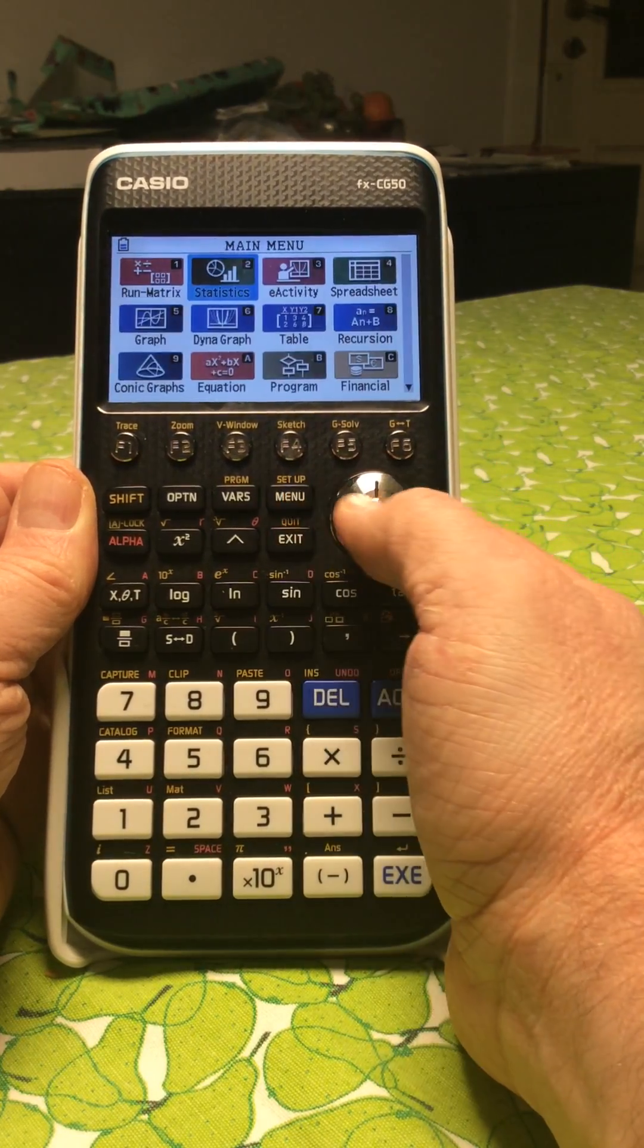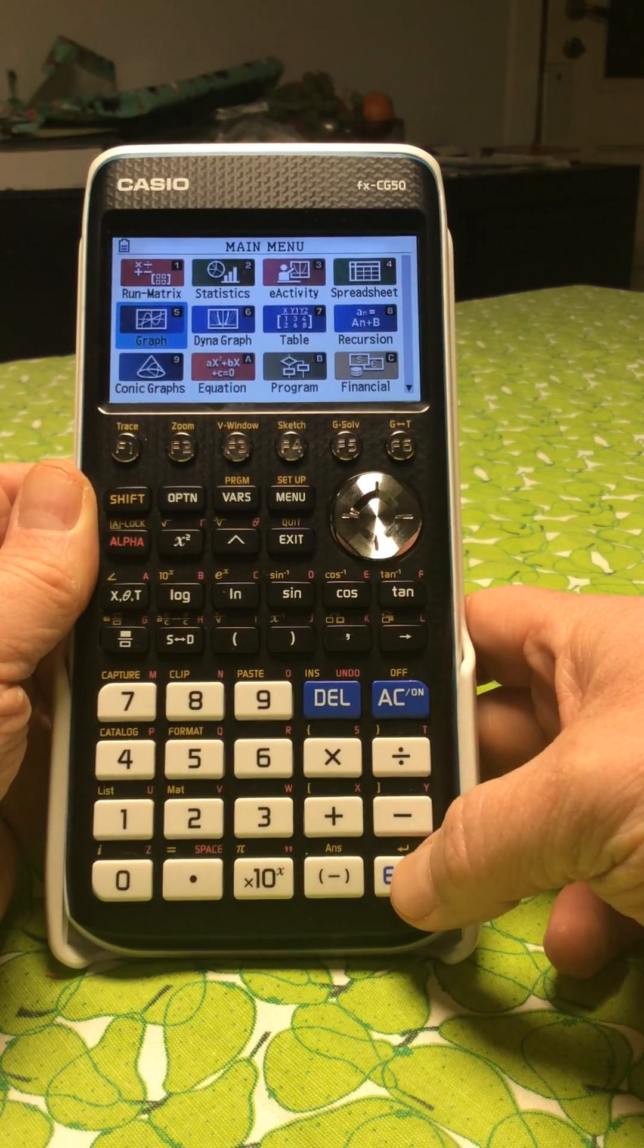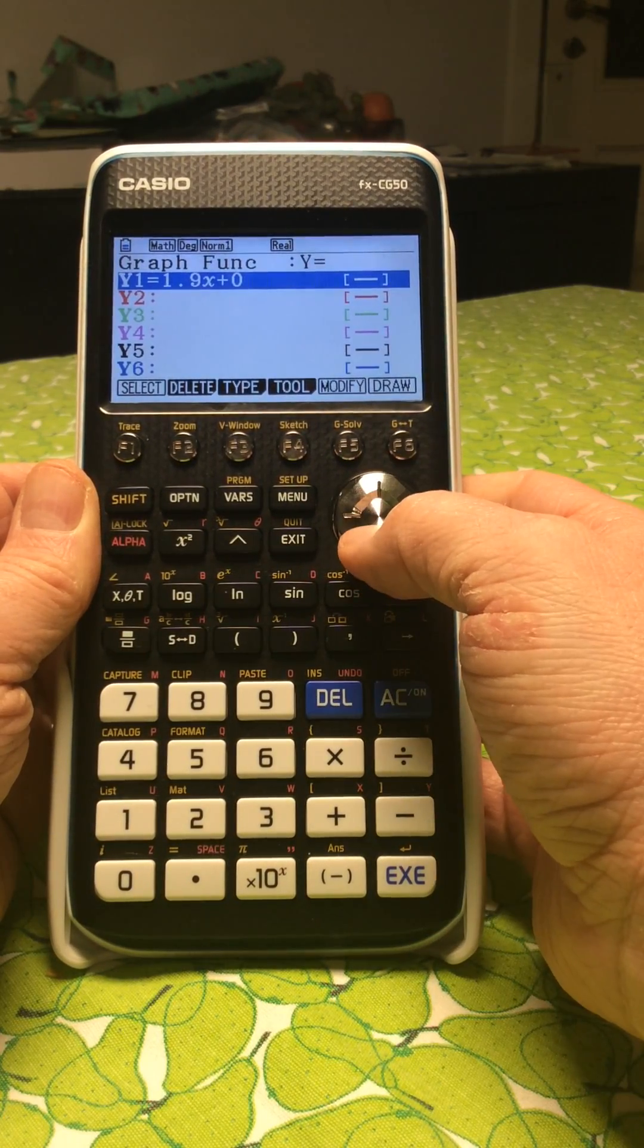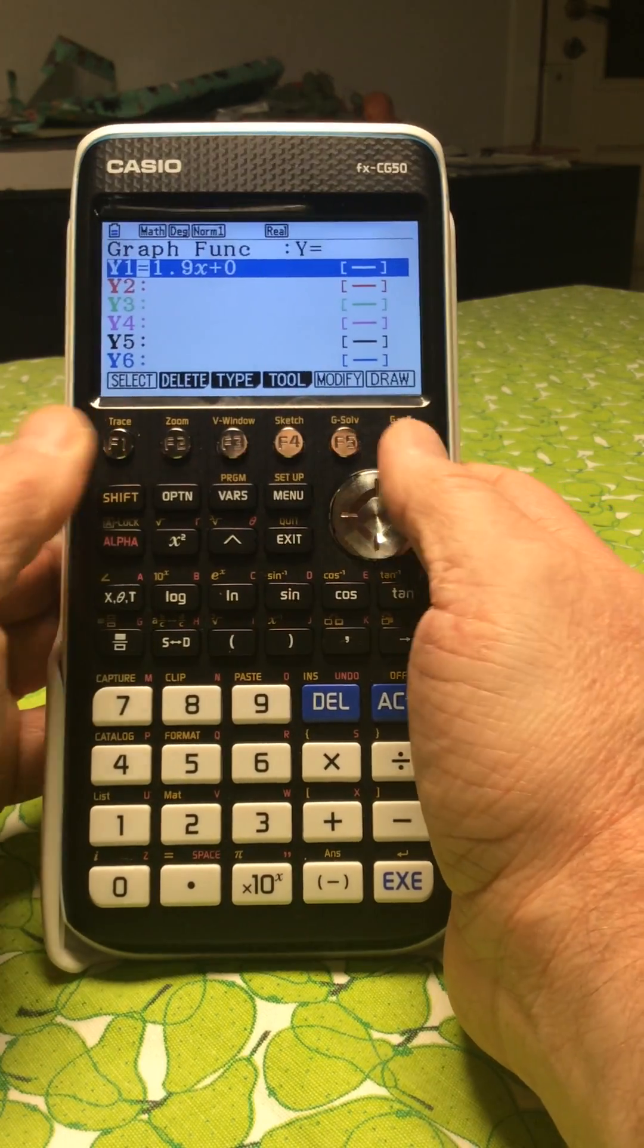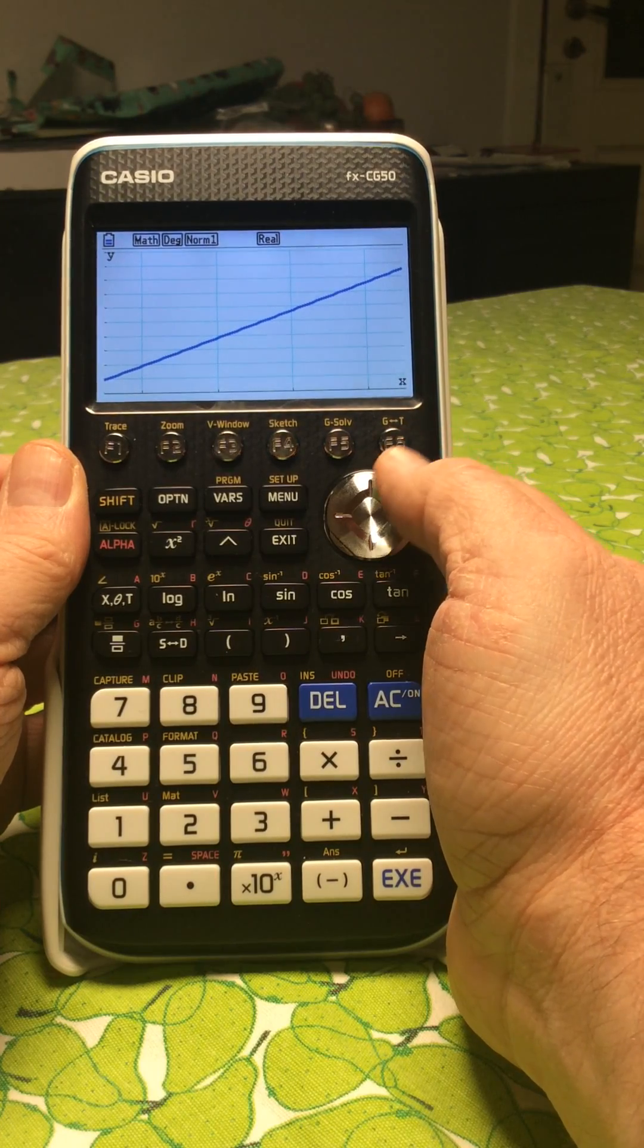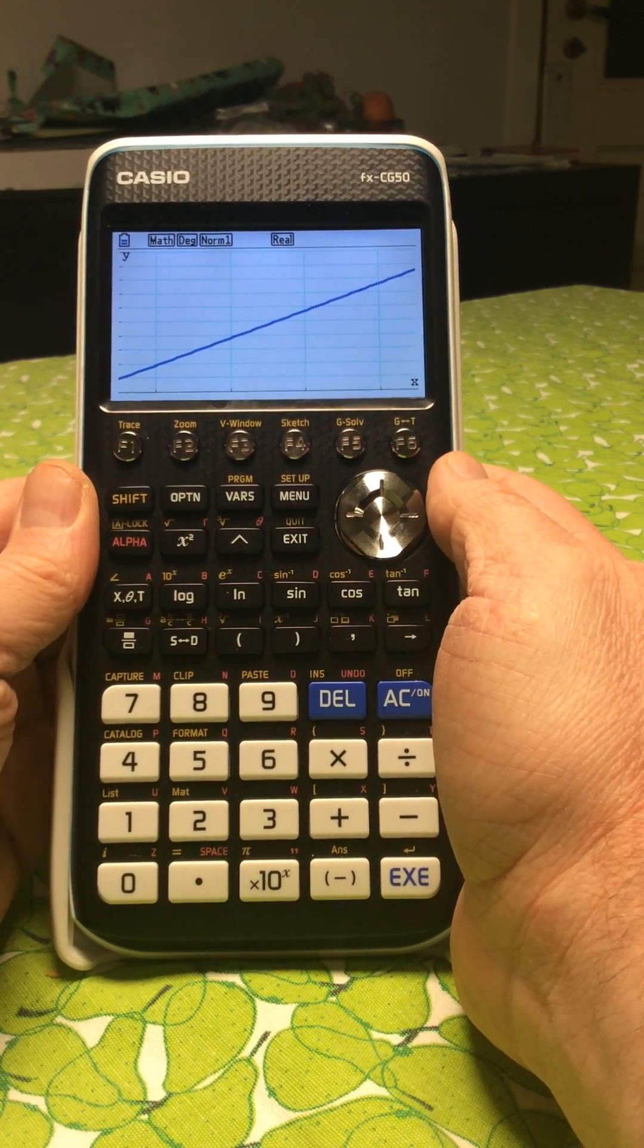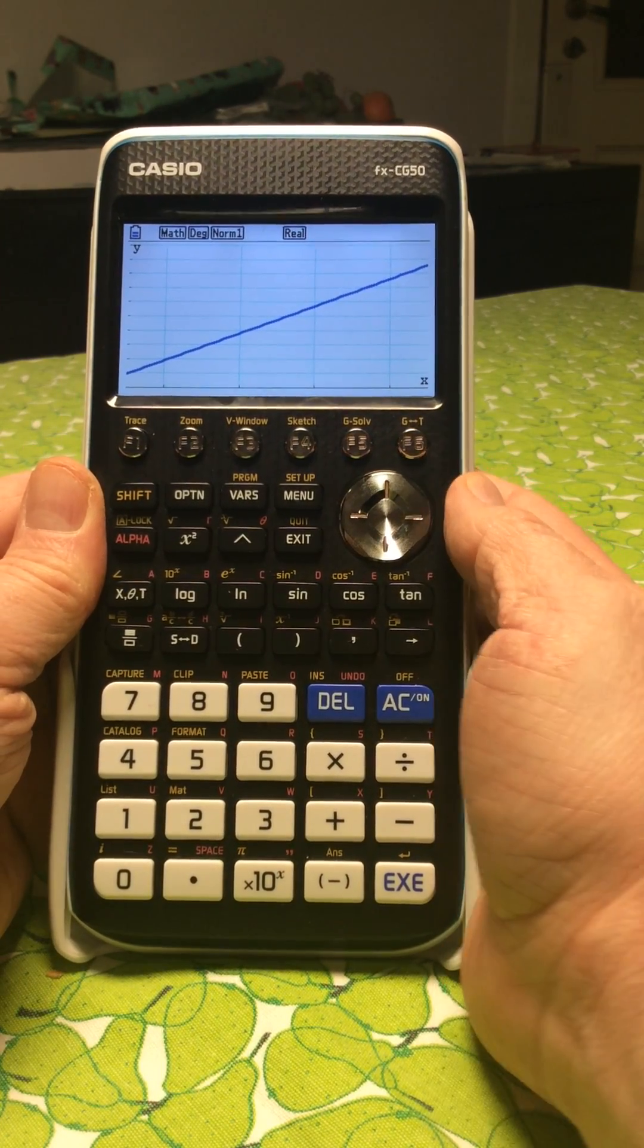but if we go to menu and then down to graph, we see that this function is now put in here, and we can actually draw that as a graph on the function like this. So that's how you do linear regression on your calculator.